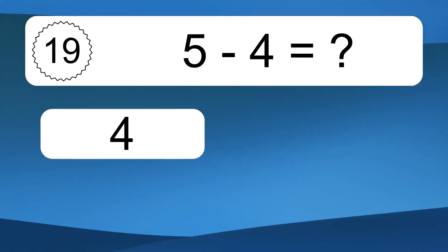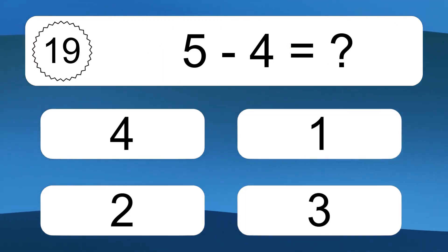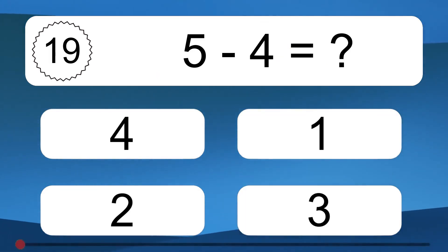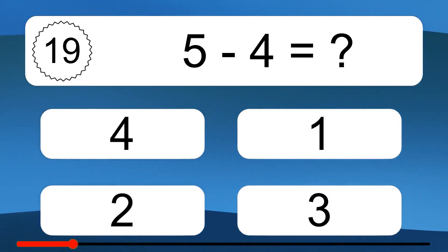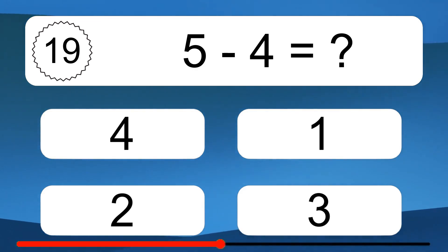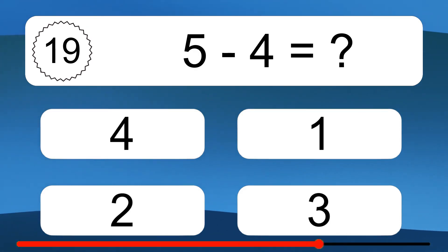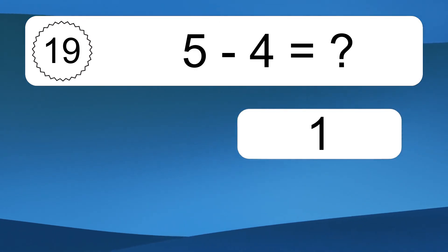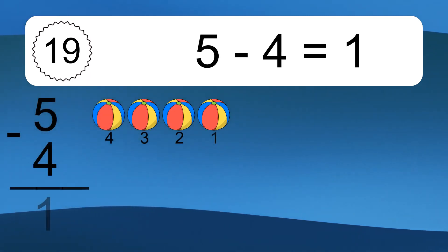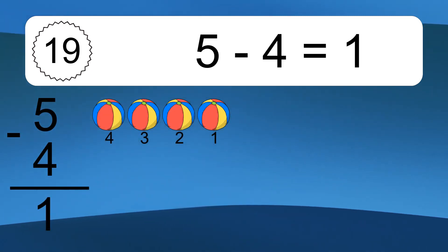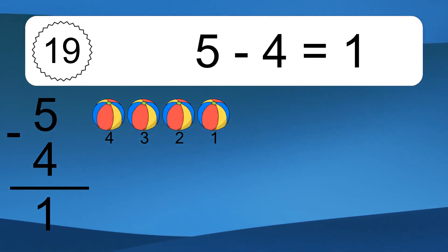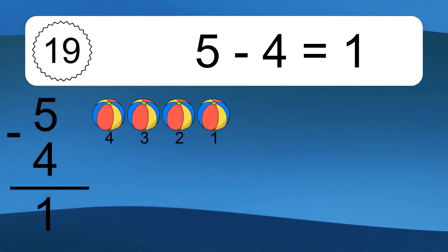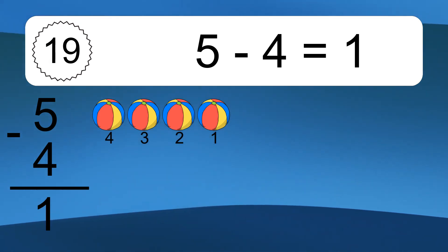5 minus 4 equals what? 5 minus 4 equals 1. Let's count it. 4, 3, 2, 1.